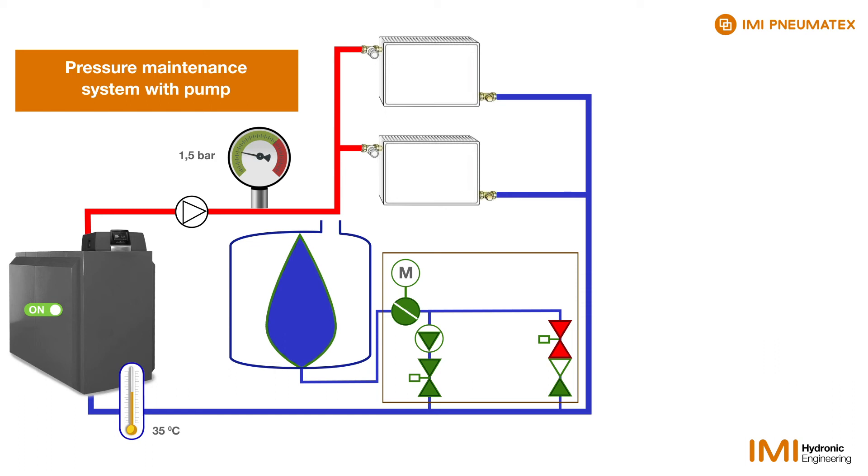It opens a motor valve and starts the pump. This pushes water out of the vessel back into the system. The system pressure increases again to 1.8 bar and the pump switches off.